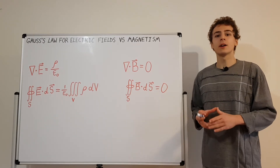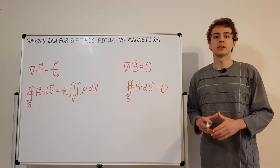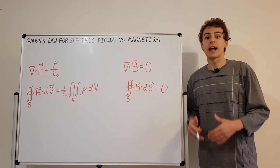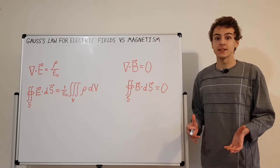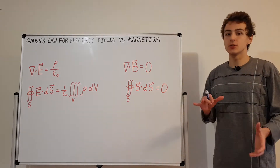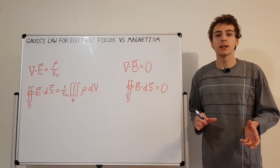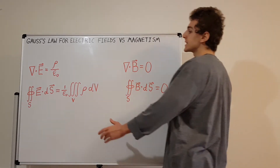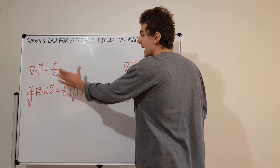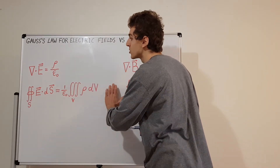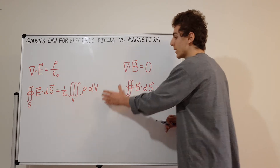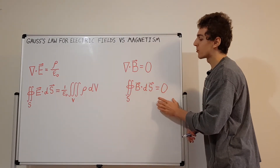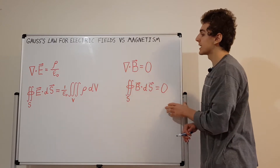In this video I'm going to compare two essential laws in electromagnetism: Gauss's law for electric fields and Gauss's law for magnetism. Let's have a look at these two laws and see what some of the similarities and differences are. On the left hand side I have the differential form and the integral form of Gauss's law for electric fields, and on the right hand side the differential form and integral form of Gauss's law for magnetism.